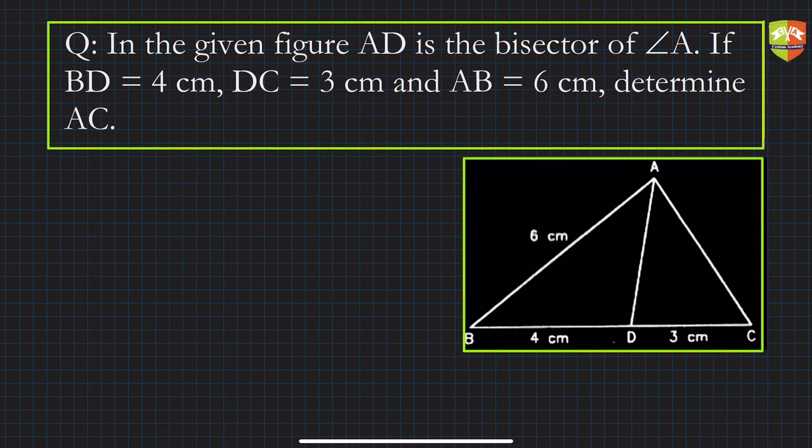Hello and welcome to problem solving session on triangles. In this question it's given that AD is the bisector of angle A, and BD is 4 cm, DC is 3 cm, and AB is 6 cm. These are the information which is given. We have to determine the length of AC.